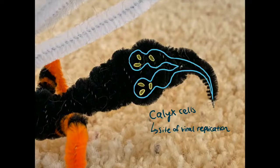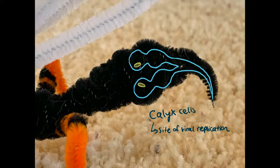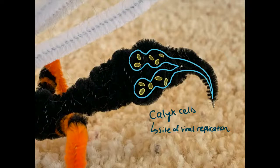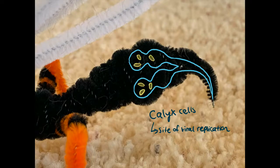These calyx cells seem to have evolved especially for this purpose. After assembly, the virus exits the calyx cells and gathers in the wasp's reproductive tract, near her ovipositor. The ovipositor is a tube-like organ used for laying eggs. In the case of wasps and bees, the ovipositor is the same thing as the stinger.